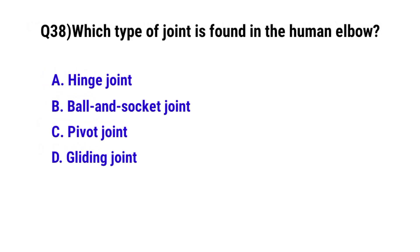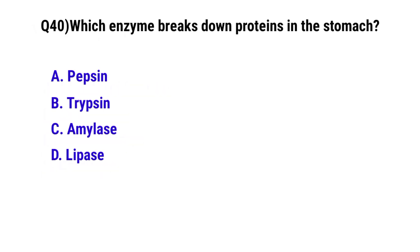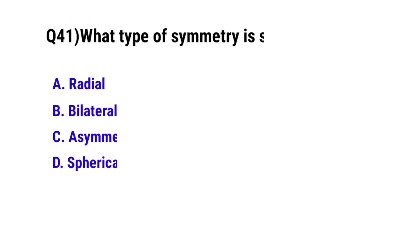Question 38: Which type of joint is found in the human elbow? The correct option is A: hinge joint. Question 39: Which part of the brain controls emotion and behavior? The correct option is the cerebrum. Question 40: Which enzyme breaks down proteins in the stomach? The correct option is pepsin.